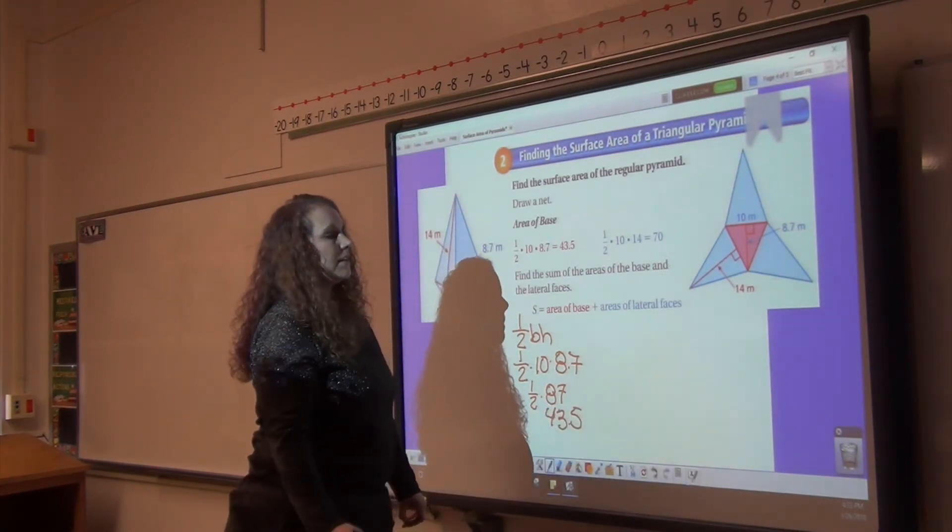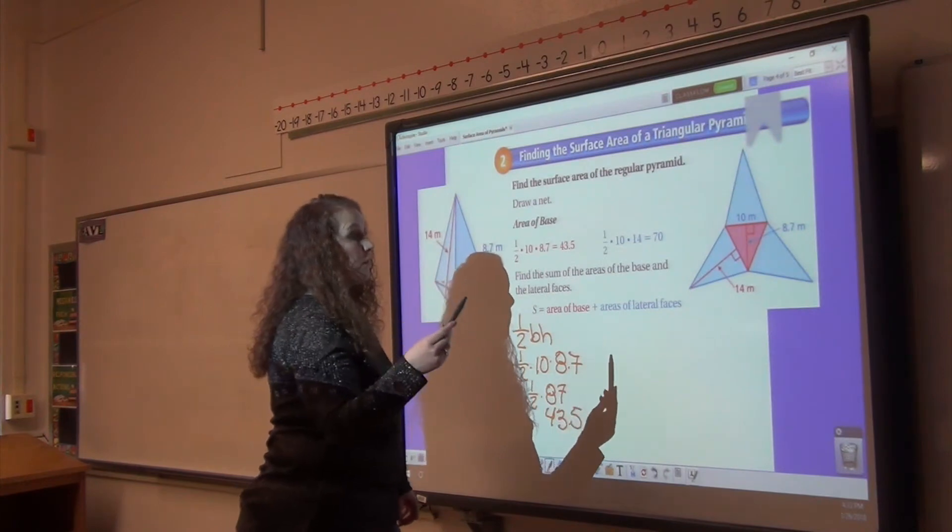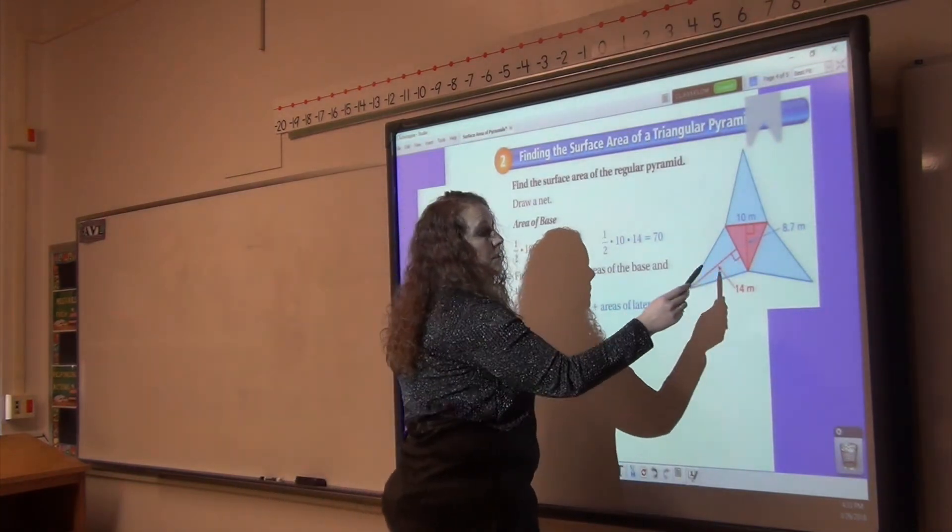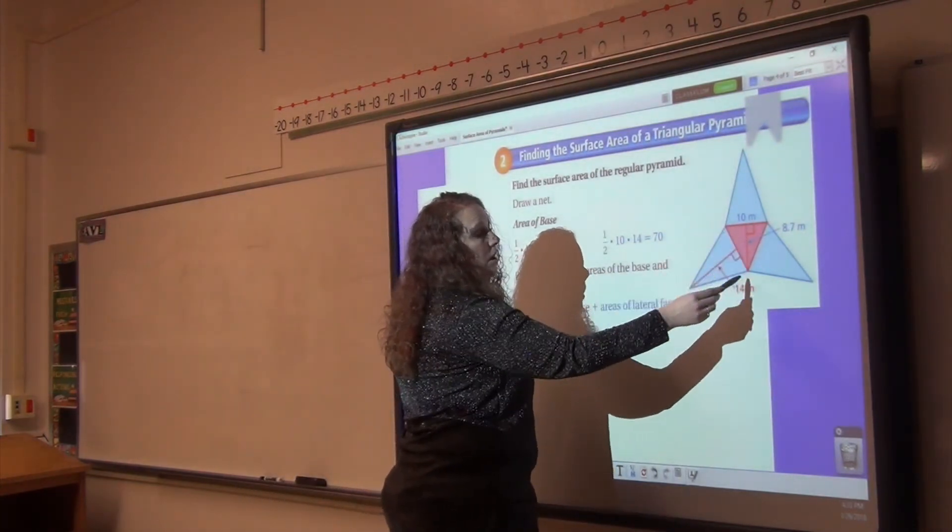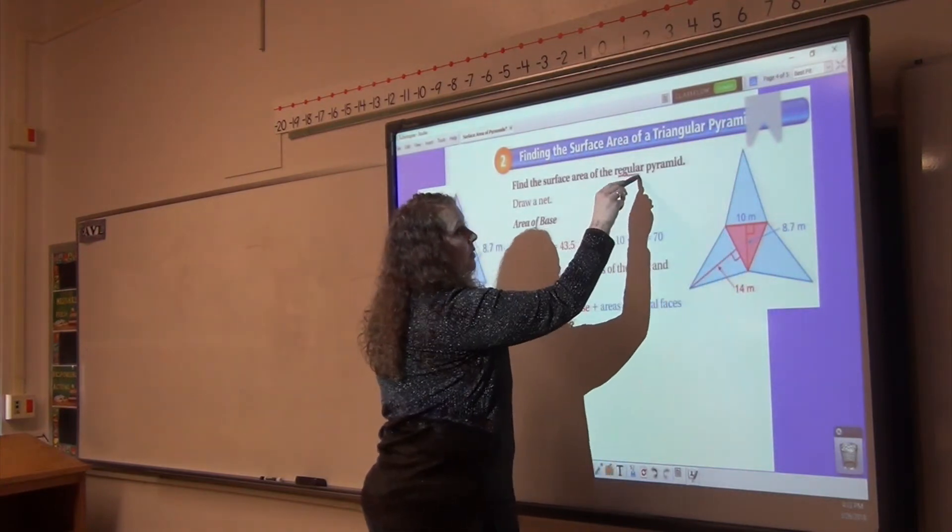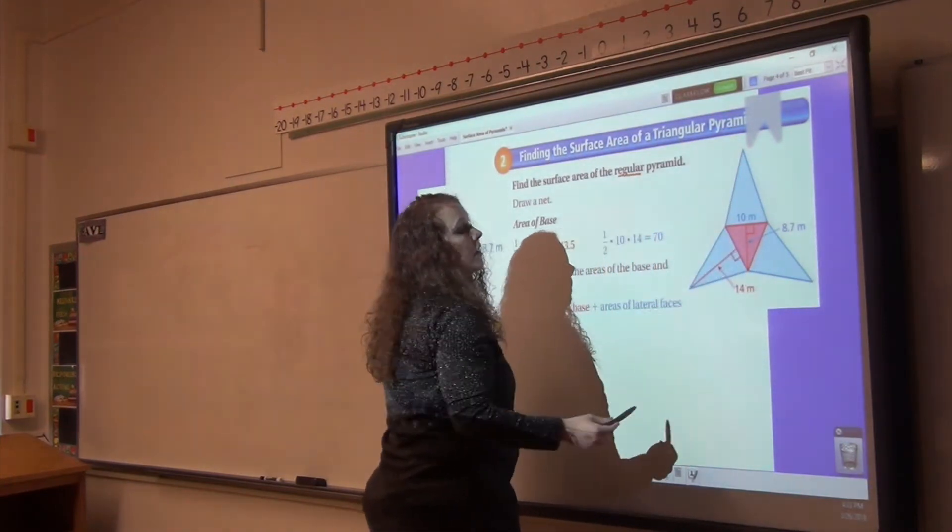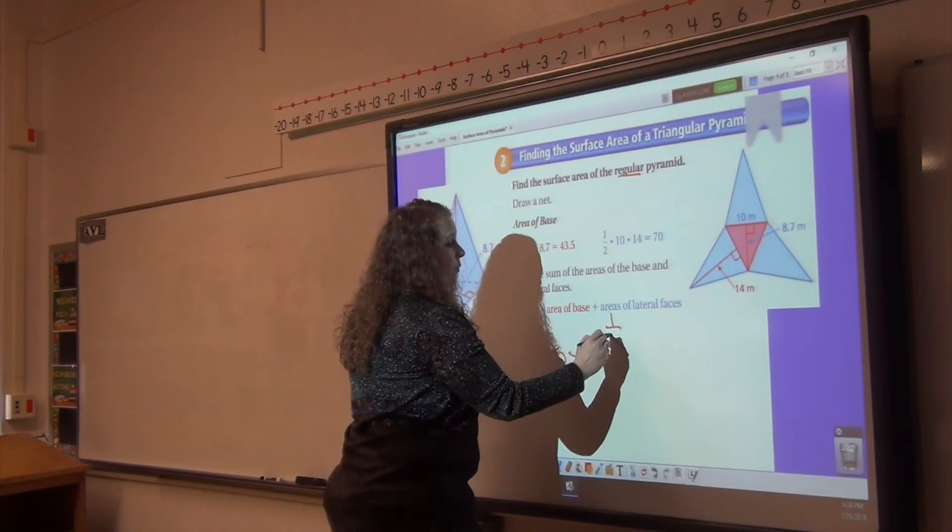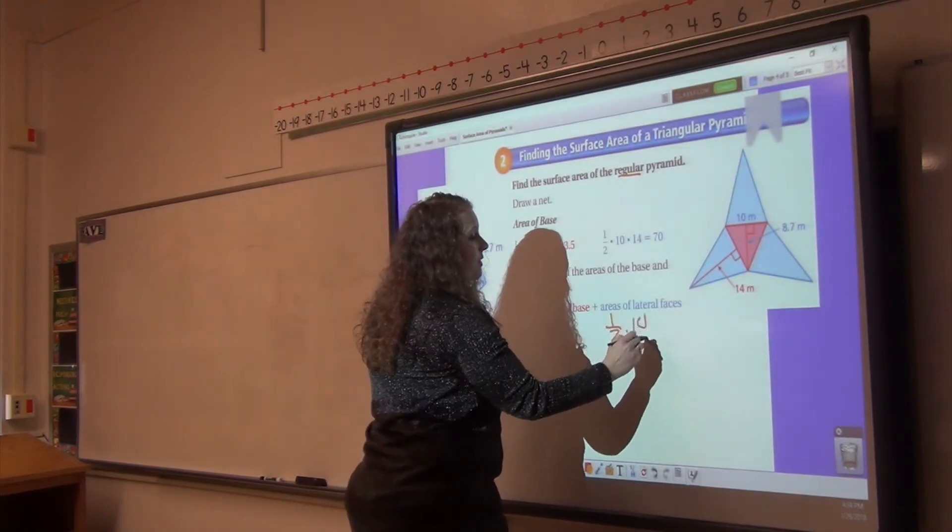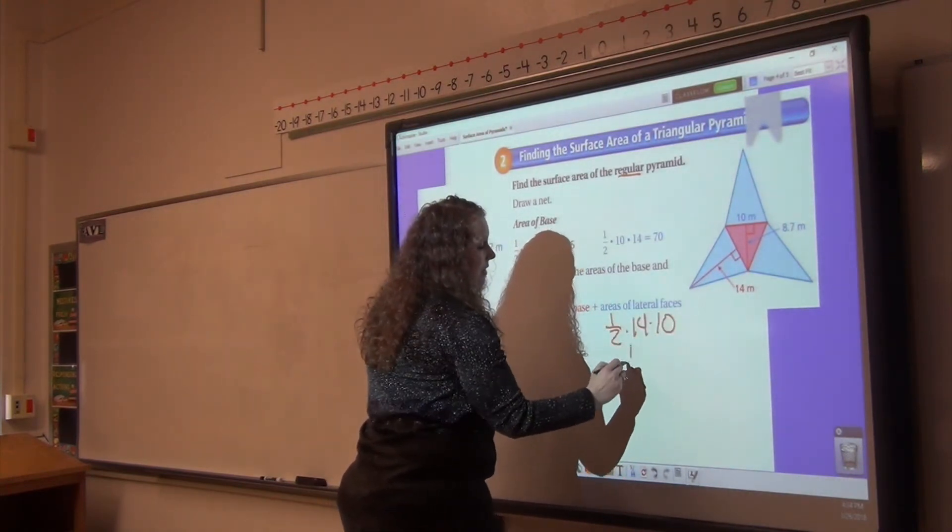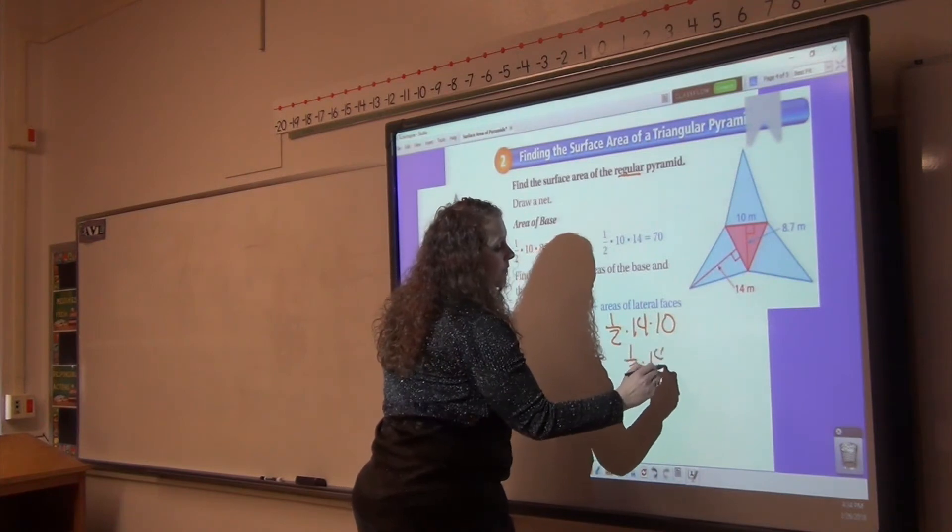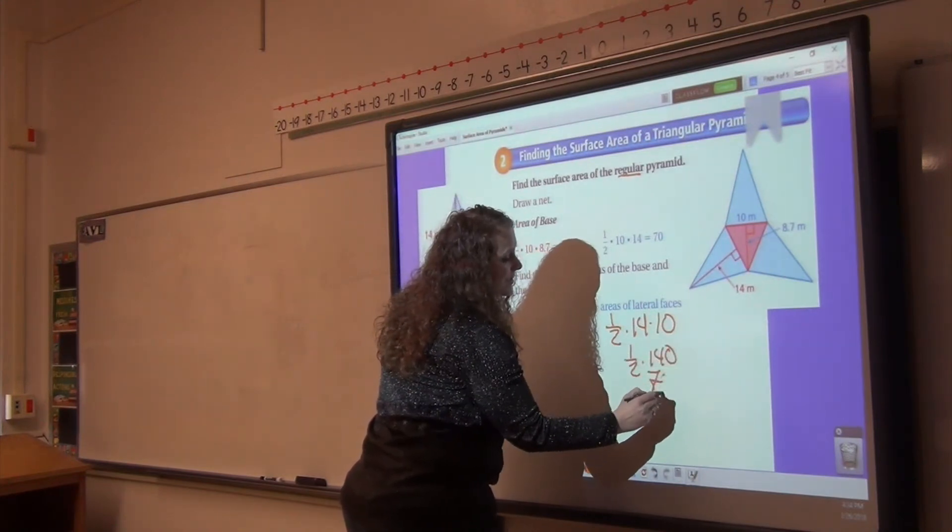Then we need to find the area of one of the sides. Our slant height is 14, and it's a regular pyramid, so I know this is 10 as well. So our base is 10. So it's one half times 14 times 10. One half times 140, so that equals 70.